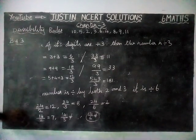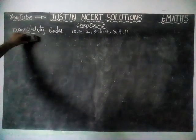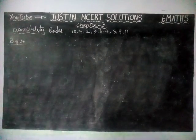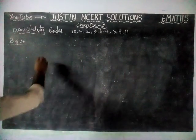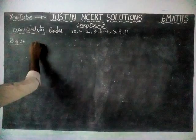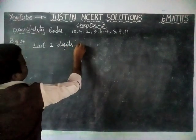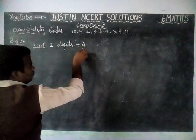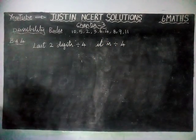Next, divisibility by 4. If the last two digits of a number are divisible by 4, then the whole number is divisible by 4. No need to check the remaining digits — only the last two digits matter.